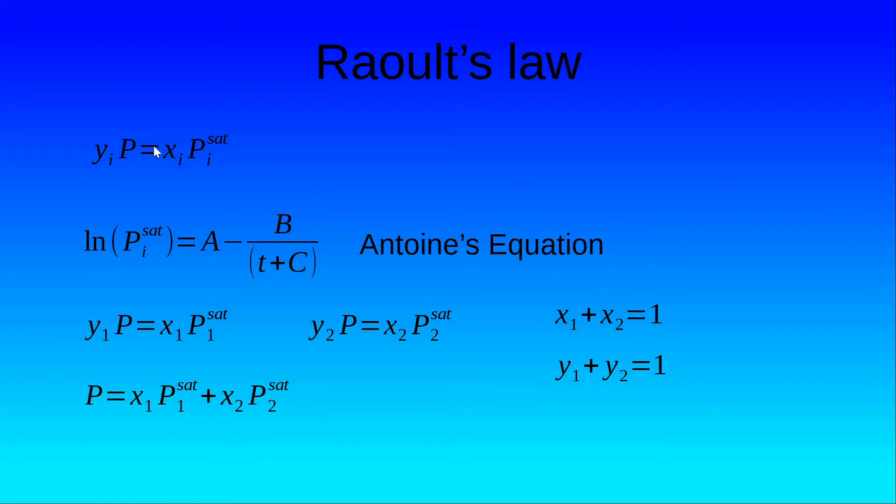Now if we apply Raoult's law to a binary system, we have y₁P = x₁P₁^sat and y₂P = x₂P₂^sat. Noting that x₁+x₂=1 and y₁+y₂=1, adding these two equations we get P = x₁P₁^sat + x₂P₂^sat.